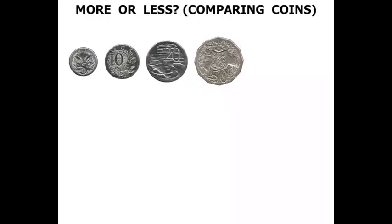They're the silver coins. Now let's look at some gold coins. This one is a $1 coin, and this one is a $2 coin. So they are the Australian coins.